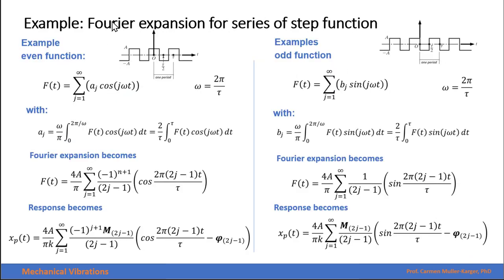Comparing even and odd functions: an even function can be expressed using only cosine terms with only aⱼ coefficients to calculate, and an odd function only using sine terms with only bⱼ coefficients. The Fourier expansions and the resulting responses differ accordingly. With this, we conclude the presentation on Fourier series. Please also review the posted example for this topic.